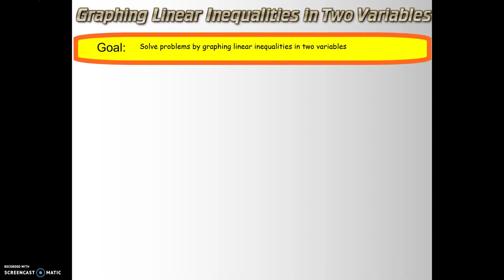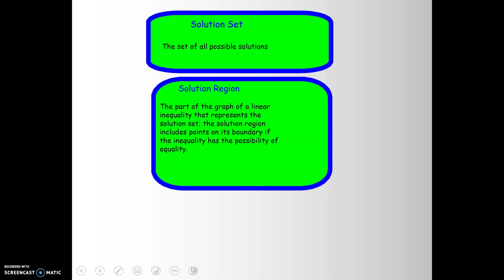To graph linear inequalities in two variables, here are some definitions. A solution set is the set of all possible solutions. The solution region is the part of the graph of a linear inequality that represents the solution set. The solution region includes points on its boundary if the inequality has a possibility of equality — that is, if we're working with less than or equal to, or greater than or equal to.